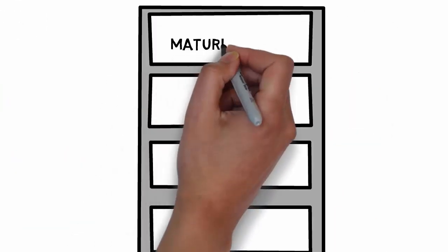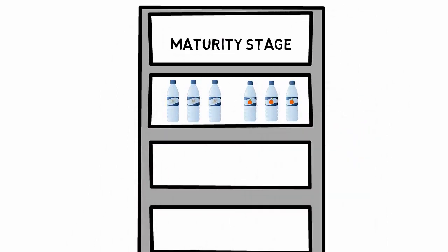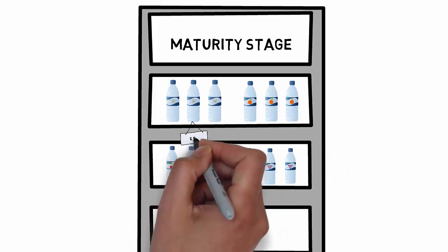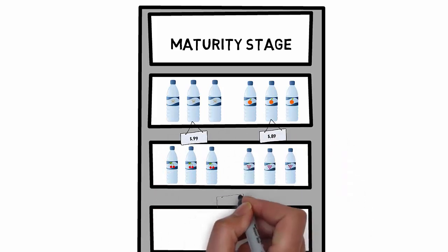In the maturity stage of the product lifecycle, a stable number of competitive products are in the market, often serving to commoditize the product. Price competition is intensive, as is the distribution of the product. Promotions are focused on reminding consumers about the unique value proposition of the product.